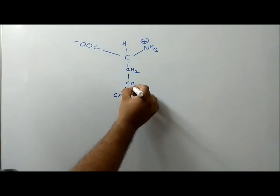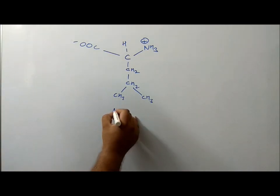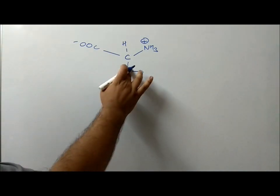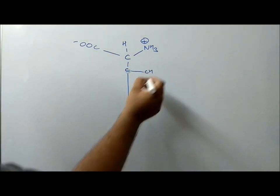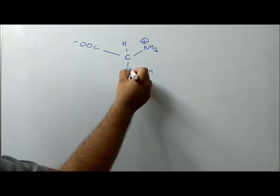If we add one more methyl to valine, it becomes leucine. And if we want to draw isoleucine, what we need to do is make an inverted L, and this inverted L, you can make this carbon chain of 3, and you get the structure of isoleucine.